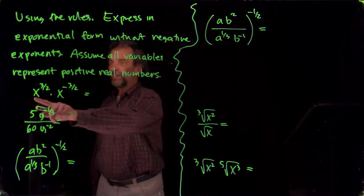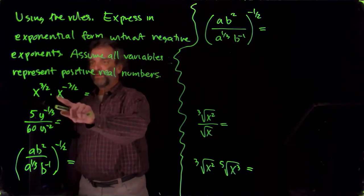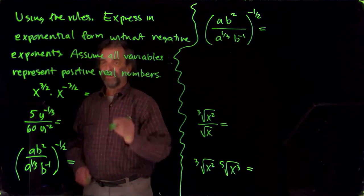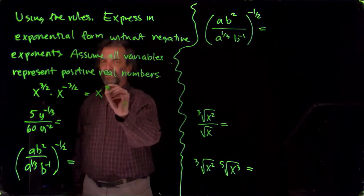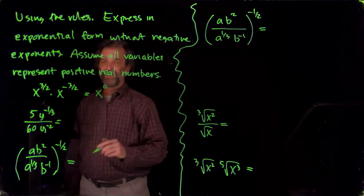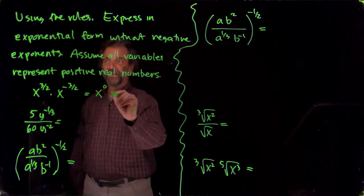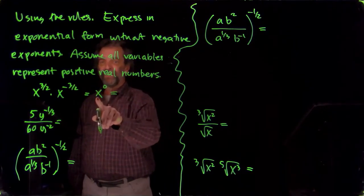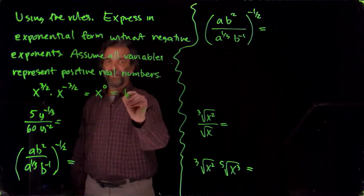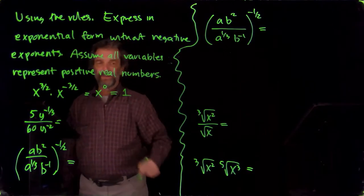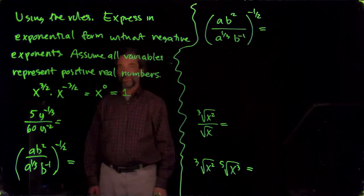So here we have the same base multiplied together so the exponents will add. We'll get x to the zero because plus and minus three halves is zero, and x is a positive real number, so x to the zero is going to be one. Anything to the zero is one except for zero to the zero, which is not defined.